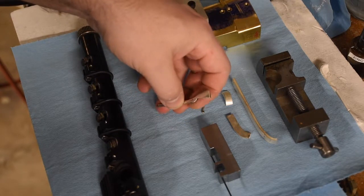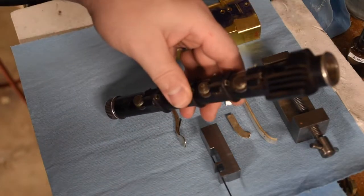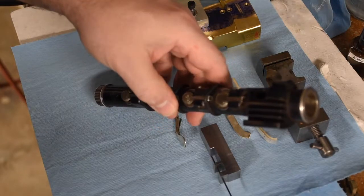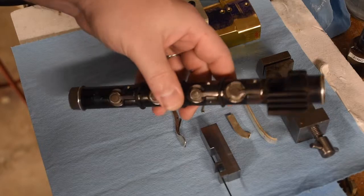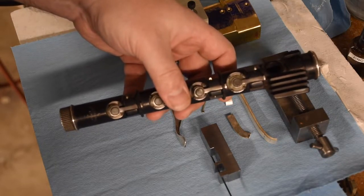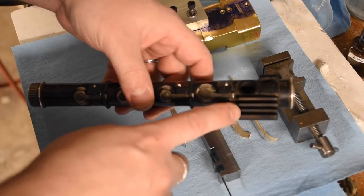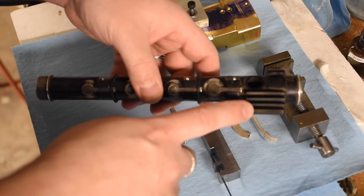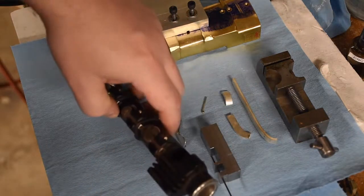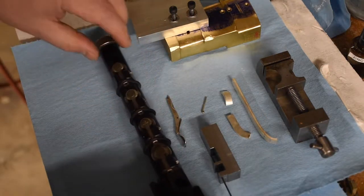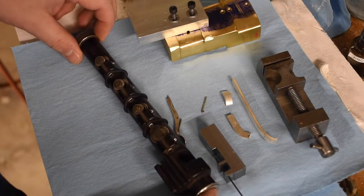The problem is, there's only about 20 of these known to exist in the world with a low B flat. And at least one of them is missing the low B flat lever. That one's in the Library of Congress. There's at least two in the Library of Congress with a low B flat.